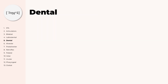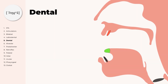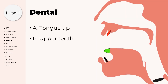Next we have the dental consonants. Here we can see in green the tongue tip and in red the upper teeth. Dental consonants are for example the English TH sounds, like in 'this' and 'thick'.